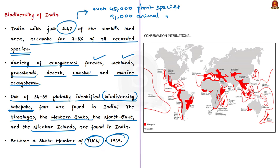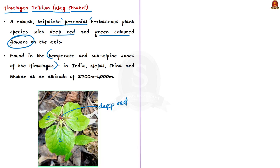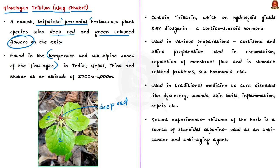One example of threatened biodiversity is the Himalayan trillium, locally known as Nagshatri. It is a robust trifoliate — meaning three-leaved — perennial herbaceous plant species with deep red and green colored flowers on its axis. This plant is found in the temperate and sub-alpine zones of the Himalayas in India, and also in Nepal, China, and Bhutan, at an altitude of about 2,700 meters to 4,000 meters. The article also mentions its presence in Afghanistan and Pakistan. In India it is found in Himachal Pradesh, Jammu and Kashmir, Sikkim, and Uttarakhand.